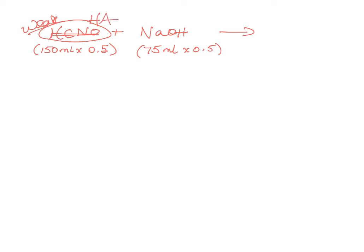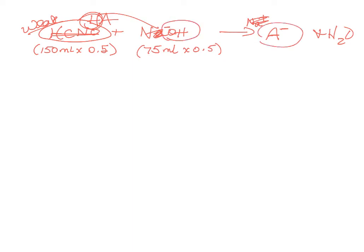I'll just call it HA since it won't affect the outcome. The hydrogen from the weak acid makes water and the salt. The instant we start titrating a weak acid, we create a buffer because you have the weak acid and as soon as you add the base you also get some of its conjugate base — and those together create a buffer.